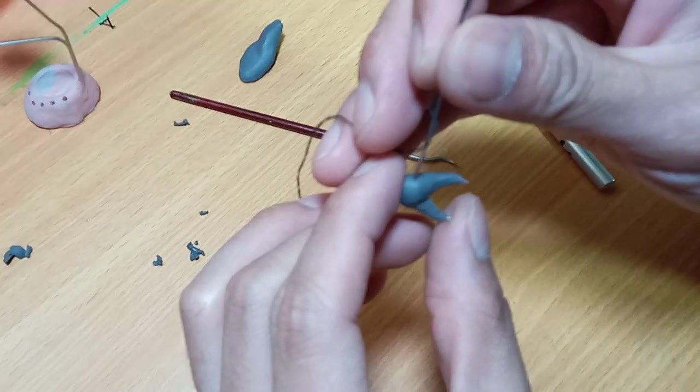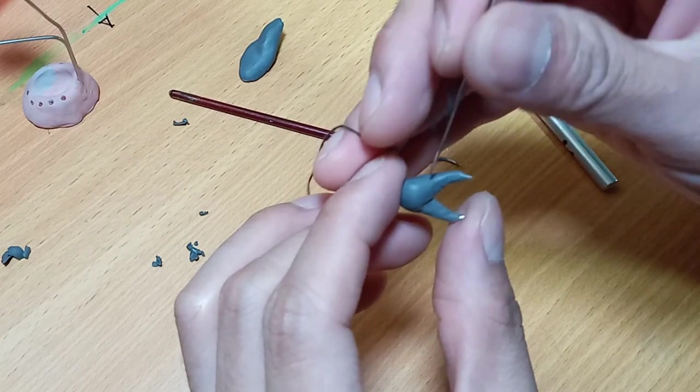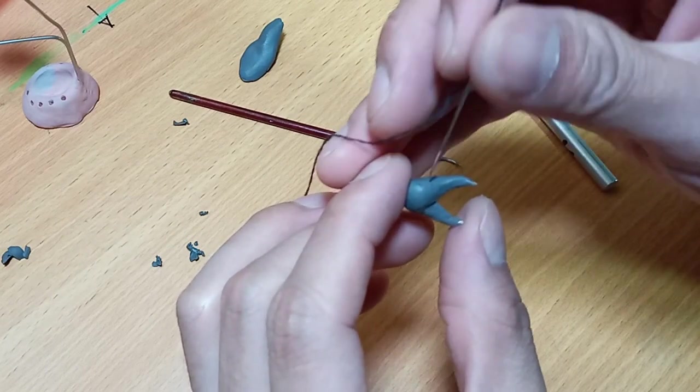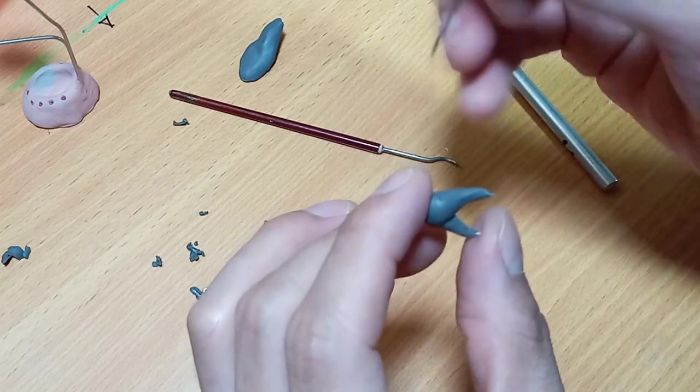Now that I got the final shape of these jaws, I smoothed it out with alcohol and made several puncture holes on them.